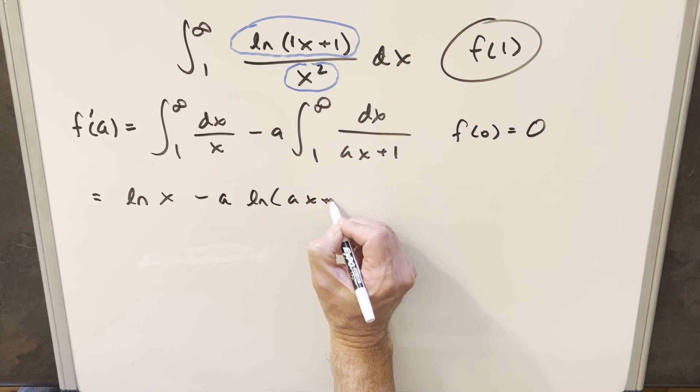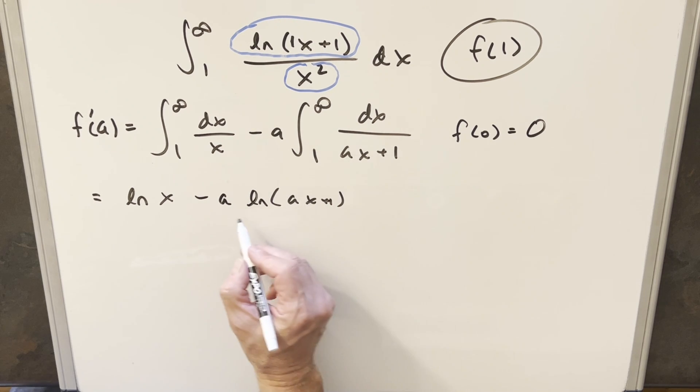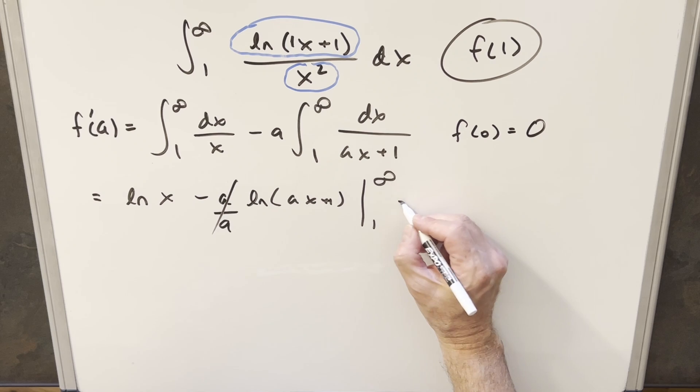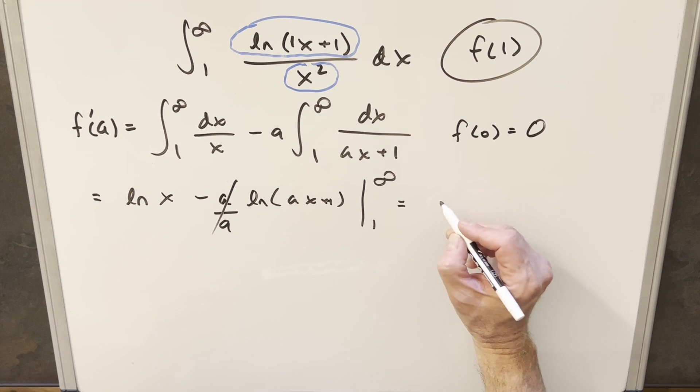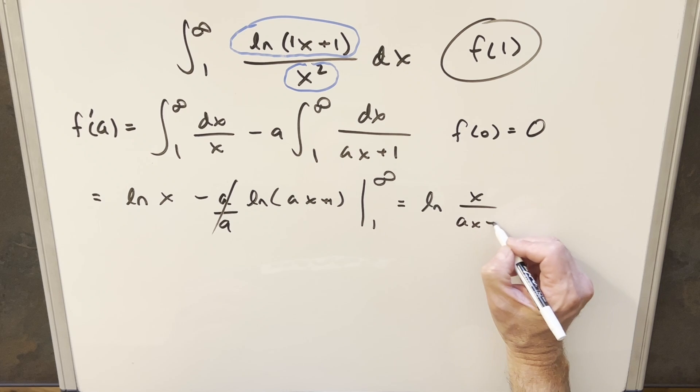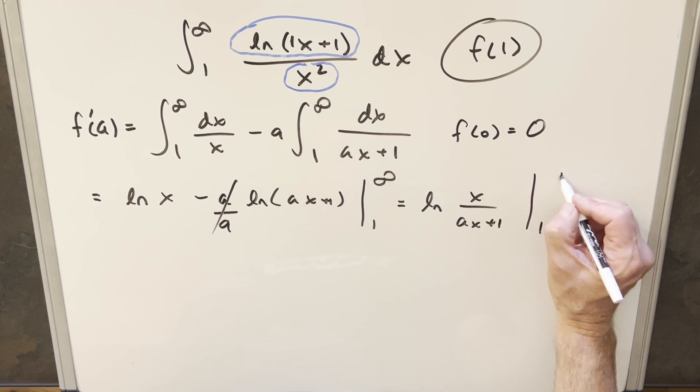But now we need this a to come up front in the denominator. So we'll have an a over here, evaluated from 1 to infinity. The a's cancel here. And then let's put these together so it doesn't look like two divergent pieces. So we'll have it as natural log x over ax plus 1 from 1 to infinity.